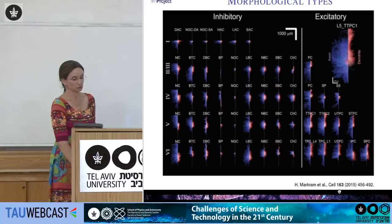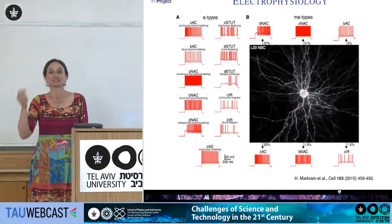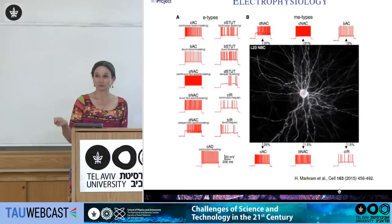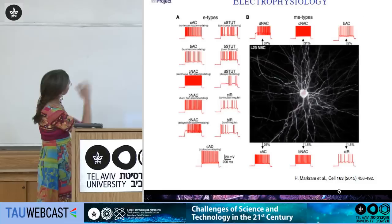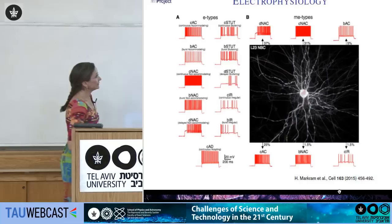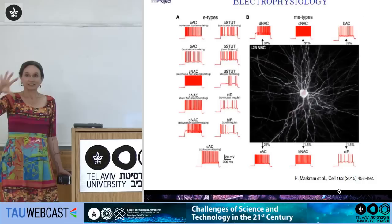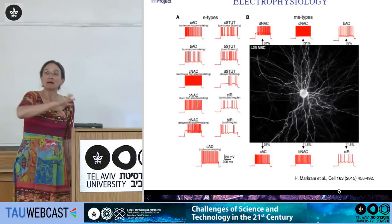It's not just the shape that counts — electrophysiology is also important. How exactly signals are transmitted, how well they are transmitted, matters because even for one morphological type you can have quite a large variety of electrical behavior. For example, a particular type of inhibitory cell called a basket cell can have different kinds of electrical behavior. Taking into account both morphological and electrical complexity gives a tremendous diversity of cell types, even within this little piece of the cortex.